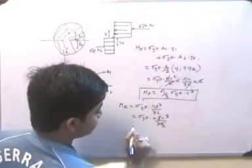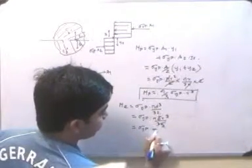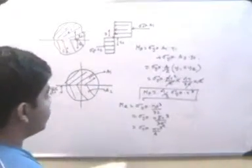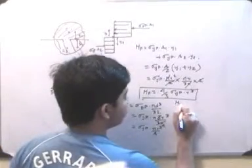Right, so me is equal to σyp into πr³ by 4.